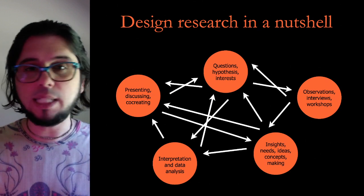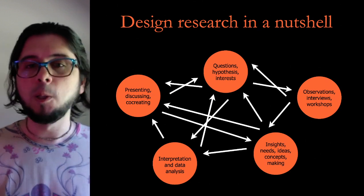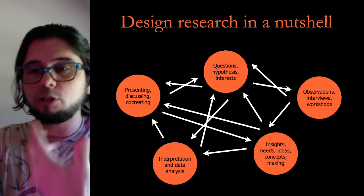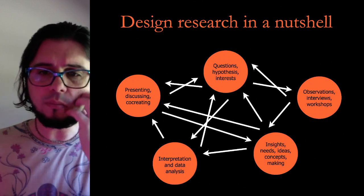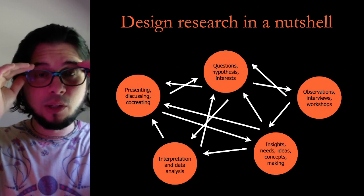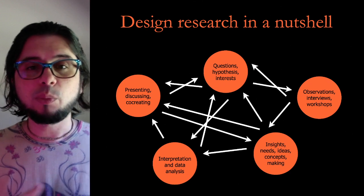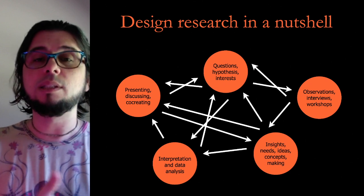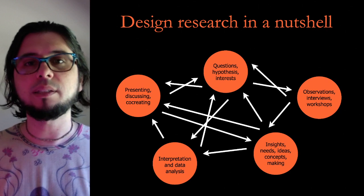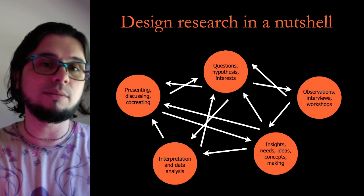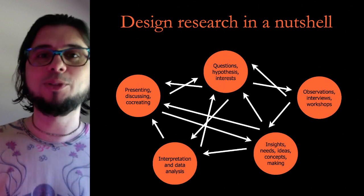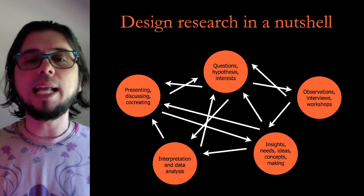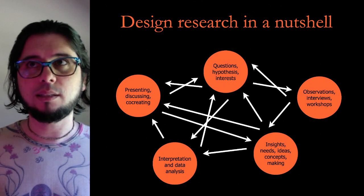There are many different ways of writing design research. We could write questions, hypotheses, and define our interests. Then we observe, interview, and have workshops with users. From there, new insights, needs, ideas, concepts, and ways of making change arise. But we have to interpret, analyze, and check for biases and potentially overlooked things, because we are part of a community of design researchers. Then we present, discuss, and co-create — and from that we get new questions and hypotheses. It's a circular process, but it could go in any non-linear direction.